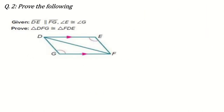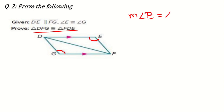The next question: DE is parallel to FG — this sign means parallel. And angle E is equal to angle G; these two angles are equal. So we have to prove that triangle DFG is congruent to triangle FDE. The down triangle is congruent to the up triangle — no problem, let us do it. Measure of angle E is equal to measure of angle G because it is given.